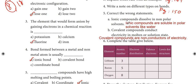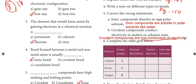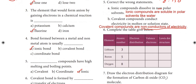Correct the wrong statement. First: 'Ionic compounds dissolve in non-polar solvents' — this is incorrect. The corrected statement is: ionic compounds are soluble in polar solvents. Second: 'Covalent compounds conduct electricity in molten or solution state' — this is false. The correction: covalent compounds are non-conductors of electricity.